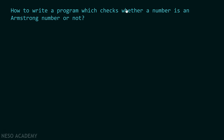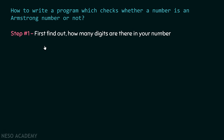To write a program that checks whether a number is an Armstrong number, there are some steps we need to follow. Step one: we need to find out how many digits are in the number. We first need to find the order of the number, so that we can multiply each digit that many times.